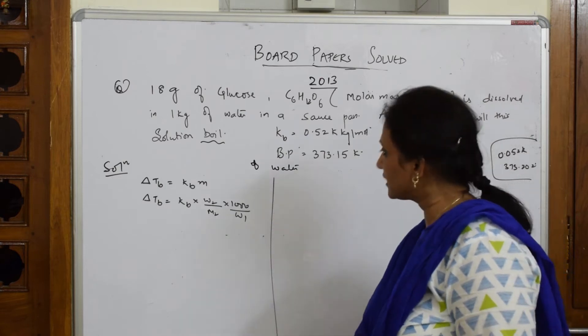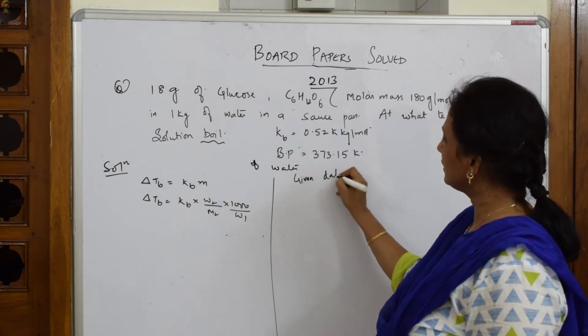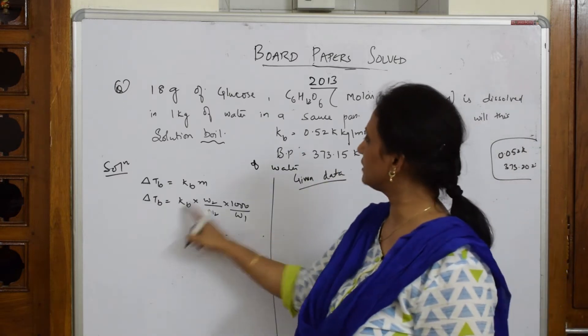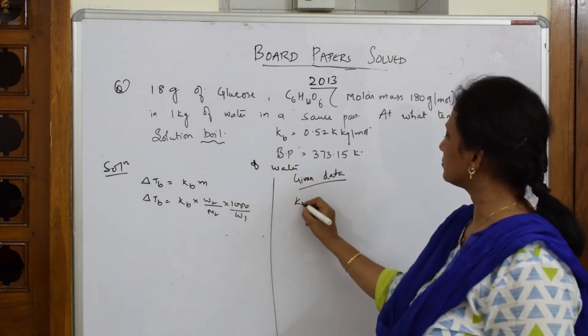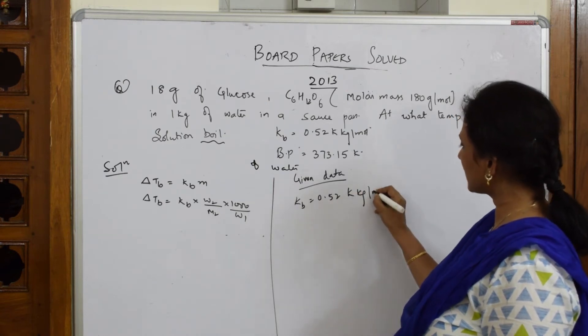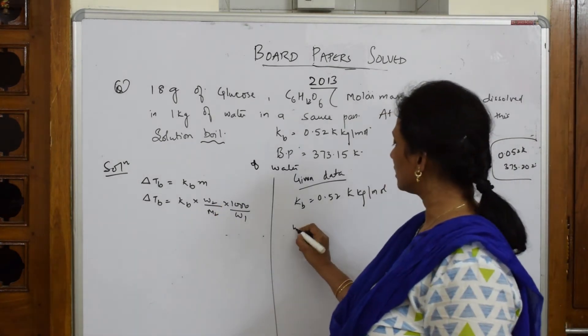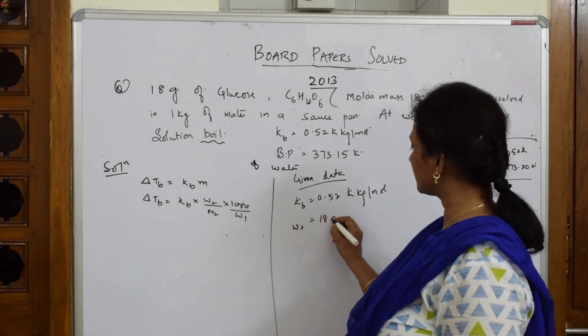Now let us come back and substitute the values. But no, I have to write the values first. So given data: kb is given to us, yes, 0.52 K, because this also carries marks. Then W2 - how much is W2? 18 grams.